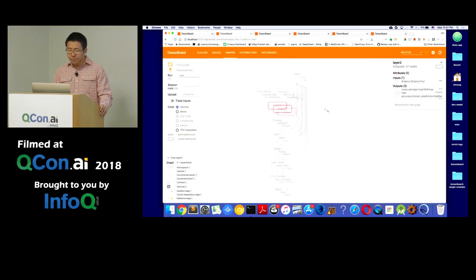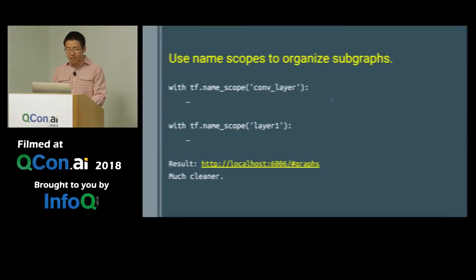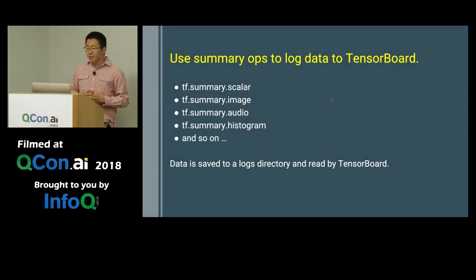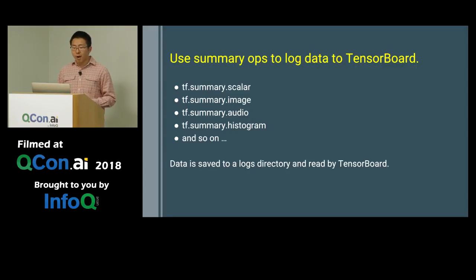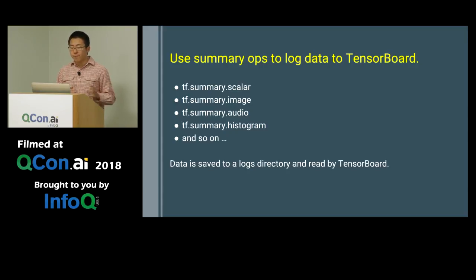Now that we have an idea of how our model is constructed correctly, we can move to the more exciting stage of actually training the model and collecting data over time. We use this concept called summary ops — we add them to our TensorFlow graph and they collect data across a series of steps. The file writer writes these events to disk. I'm going to collect scalar data like accuracy and cross entropy, as well as image data to validate that my MNIST digits are being fed into the model correctly.